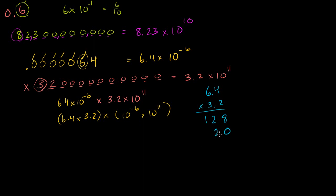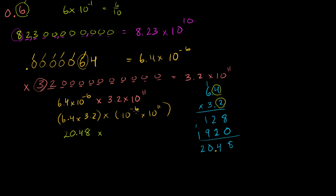Adding 128 and 1920: we get 2048. Now counting the decimal places — one in 6.4 and one in 3.2 — that's two decimal places total. So 6.4 times 3.2 equals 20.48. This gives us 20.48 times 10 to the... adding the exponents: minus 6 plus 11 equals 5, so times 10 to the fifth power.